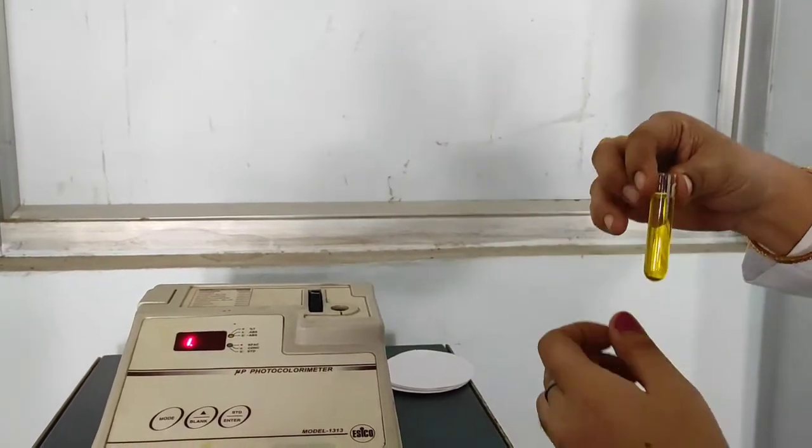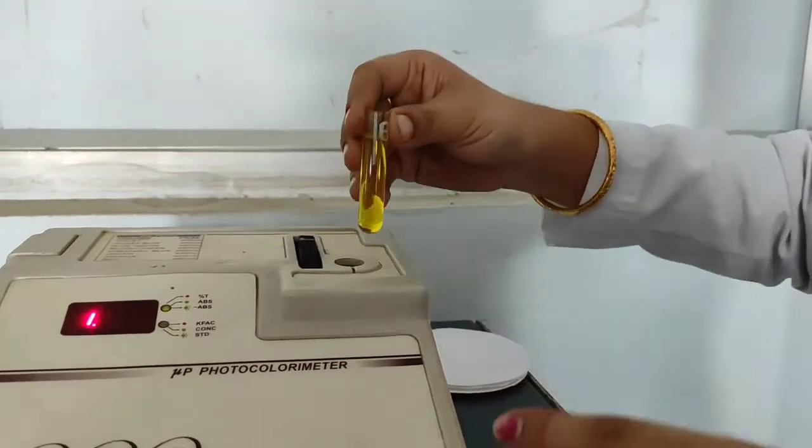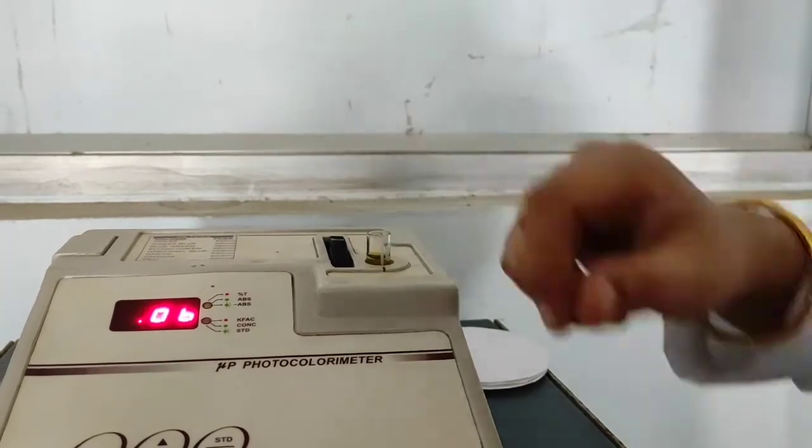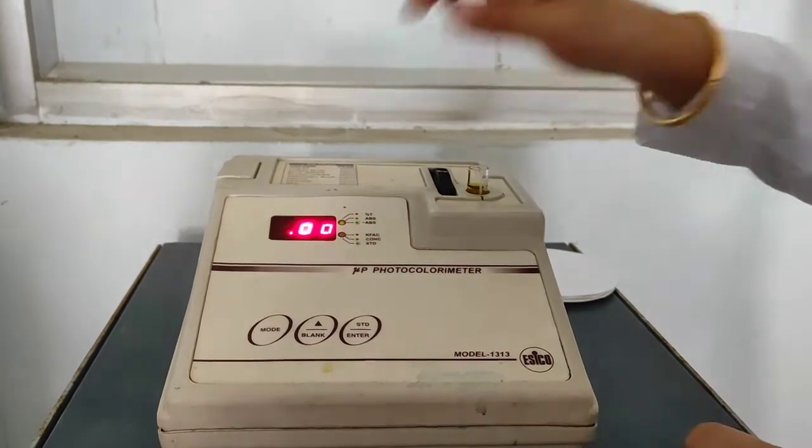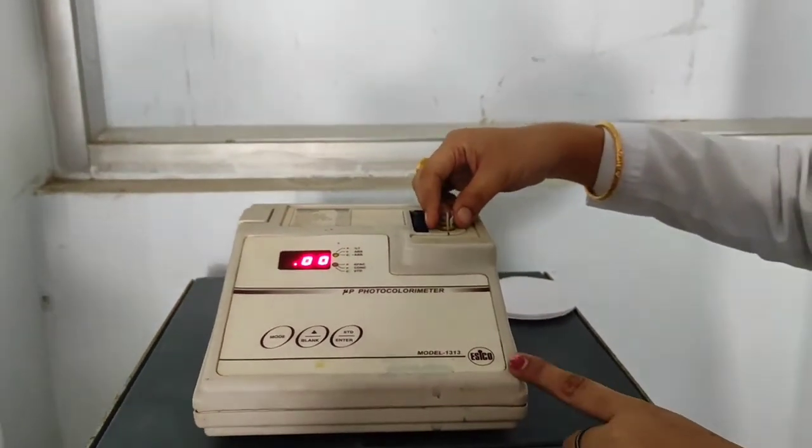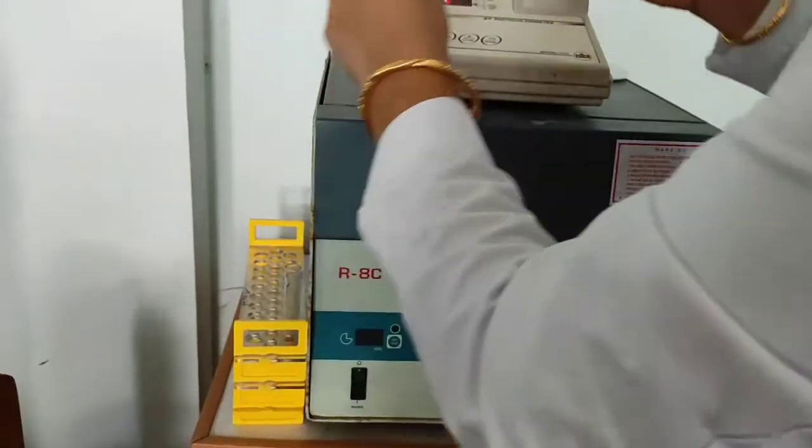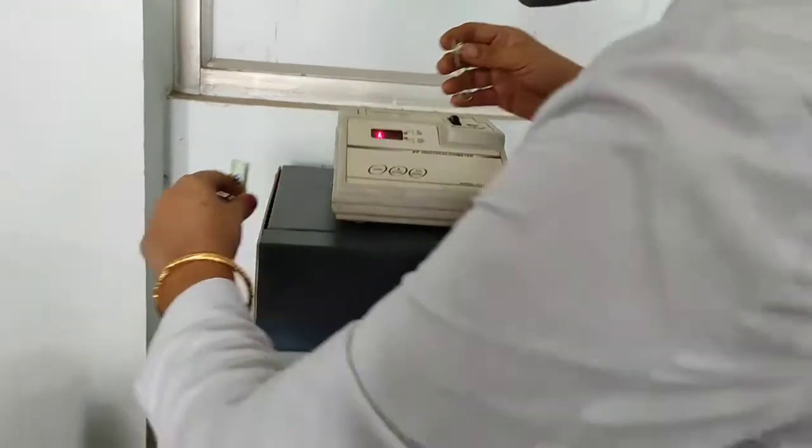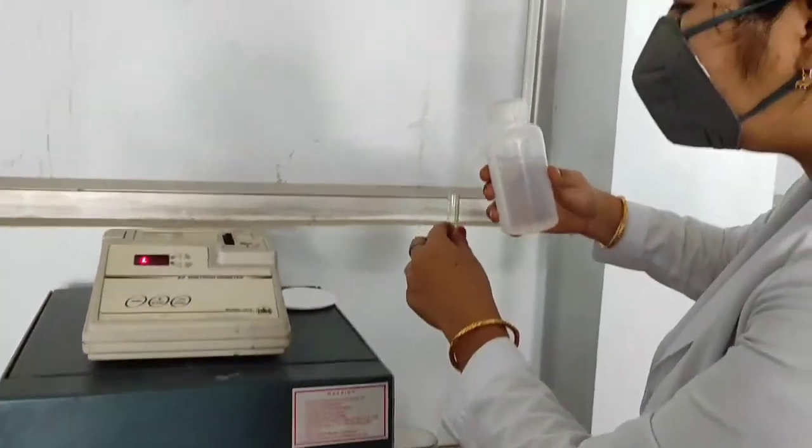So, this white mark, it has to be aligned with the notch here. So let's place this, then I have to press for the blank, so 0.00, this is optical density of the blank, and then, I'll wash it with distilled water.